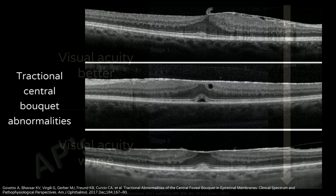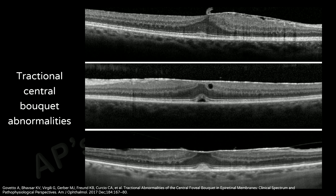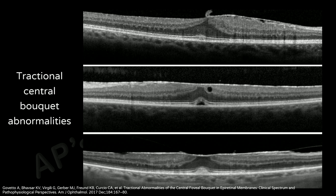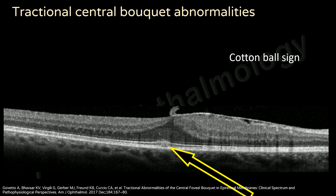In addition to IFIL, traction produced by epiretinal membranes produces additional findings on OCT in the central fovea, a hundred-micron diameter sub-foveal area comprised of a dense array of both cones and Müller cells. The cotton ball sign is the appearance of a thickened or roundish fuzzy hyperreflective area between the inner segment ellipsoid zone and the interdigitation zone in the central fovea.